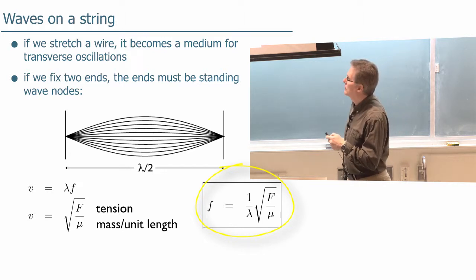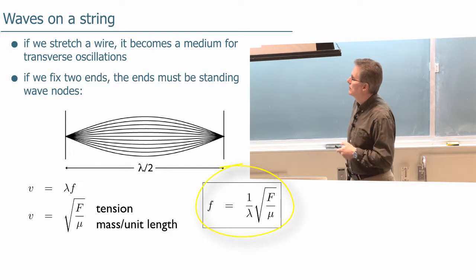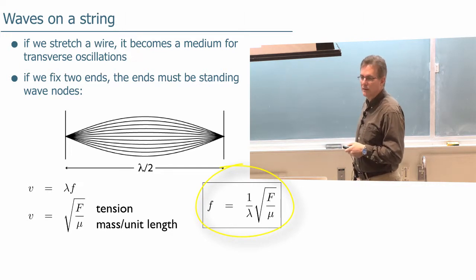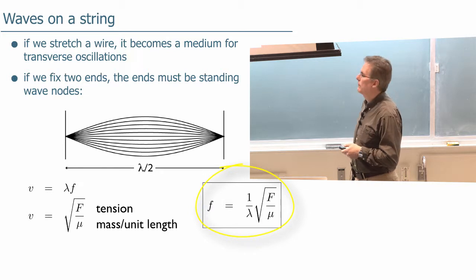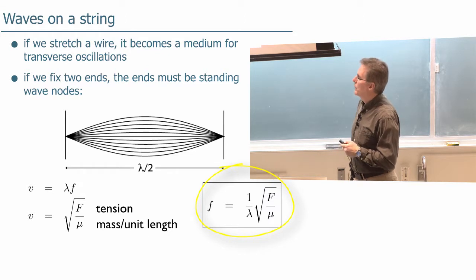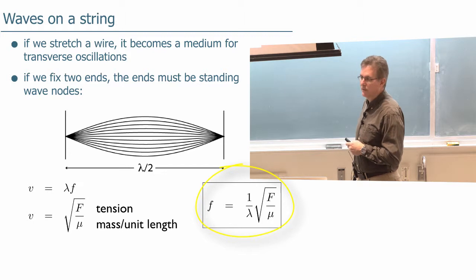This is just a constant. This does not change. The velocity of the waves in this case is not changing. Now we don't really use the velocity to calculate these standing wave patterns, but we can relate the frequency that we get to 1 over the wavelength like this.